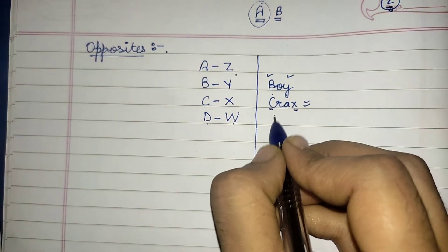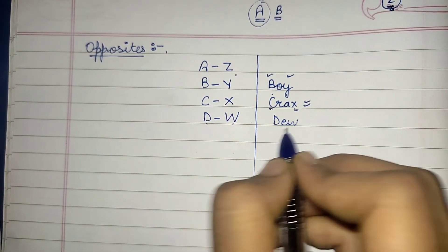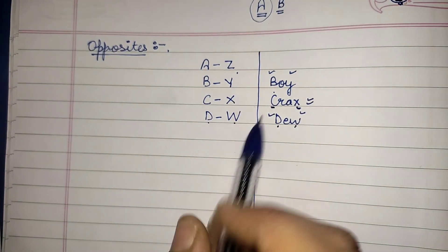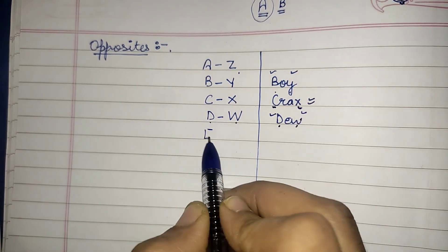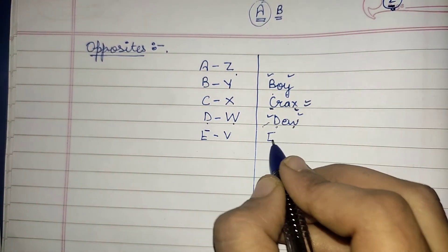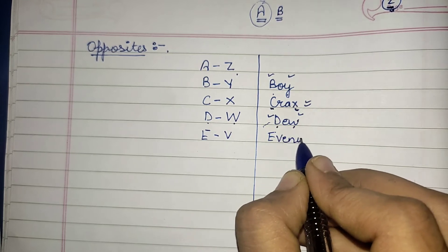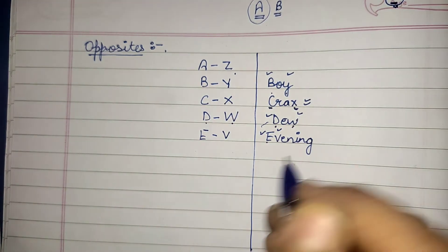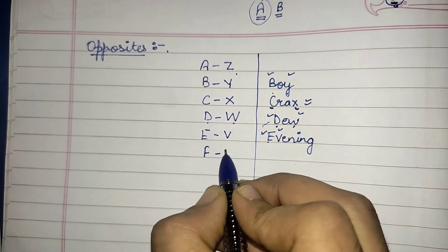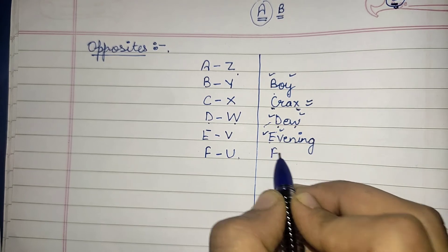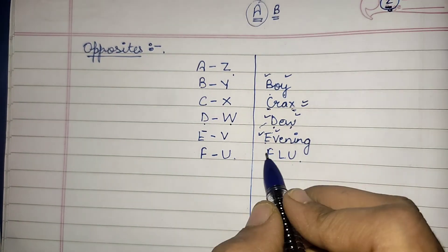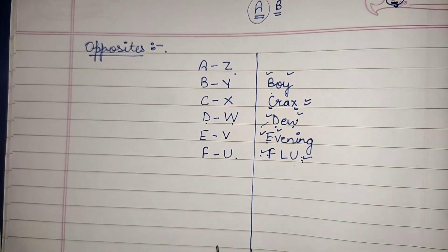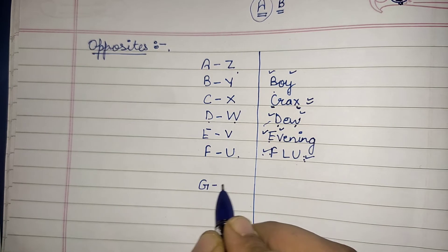E and V — E and V is 'evening', so evening helps us remember that E and V are opposite. Next, F and U — F and U is 'flu', so F and U are opposite to each other.